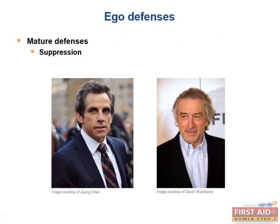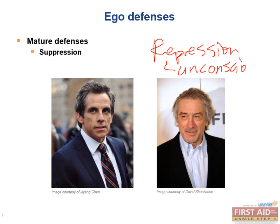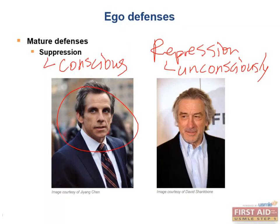Finally, the last mature ego defense is suppression. Suppression refers to a voluntary withholding of an idea or feeling from consciousness. This is similar to repression, except in repression the idea is withheld unconsciously, whereas in suppression it's conscious. A good example is a nervous fiancé who chooses not to think about his first meeting with his future wife's parents until the day before the encounter, like Ben Stiller in Meet the Parents.